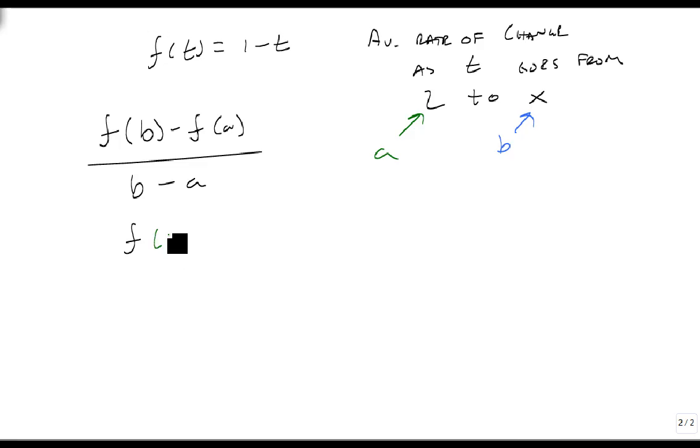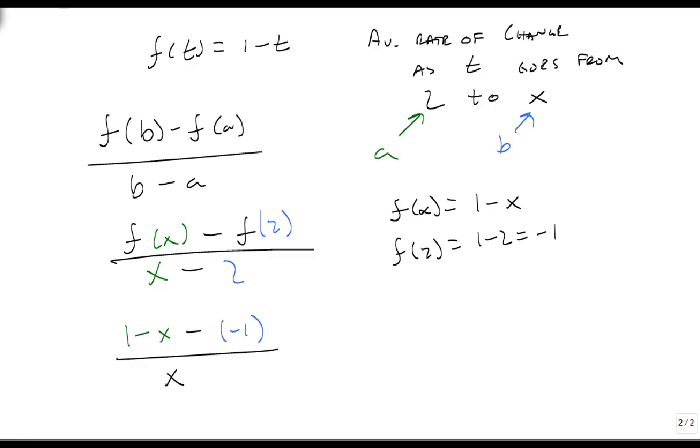So f of x minus f of 2 all over x minus 2. Well f of x is really straightforward. It's just 1 minus x, and that's as far as it goes. f of 2 is 1 minus 2, which is minus 1.